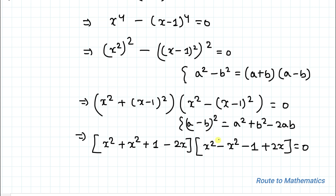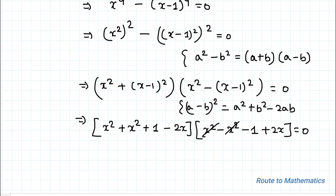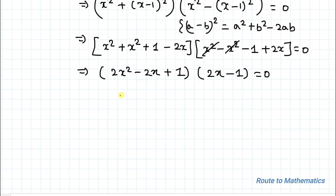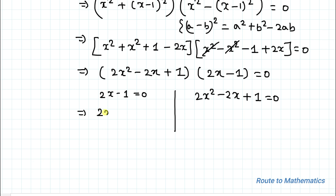So we get (x squared + x squared + 1 minus 2x) multiplied by (x squared minus x squared minus 1 plus 2x) equals 0. The x squared terms cancel, giving us (2x squared minus 2x plus 1) multiplied by (2x minus 1) equals 0. From the linear factor, 2x minus 1 equals 0, so x equals 1/2 is one solution.